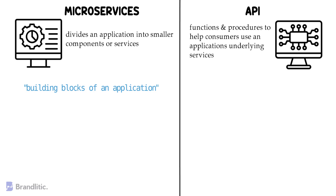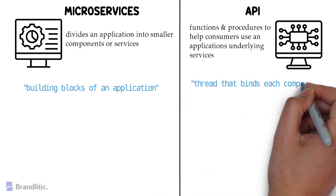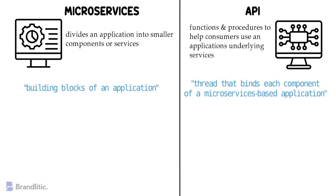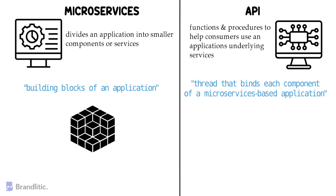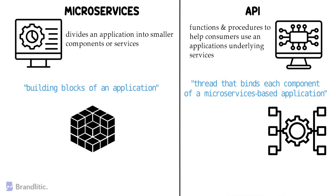An API, on the other hand, is known as the thread that binds each component of a microservices-based application. Number three: components of microservices can be considered as building blocks of an application, while an application's APIs are considered as functional blocks responsible for performing a certain task — such as payment processing through the PayPal API. Number four: microservices are a complete architecture with multiple smaller services, whereas an API is an individual component.